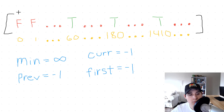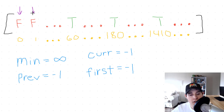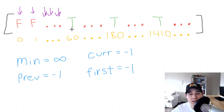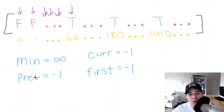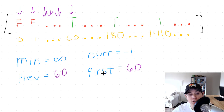We start iterating from index 0. Anytime we encounter a false, we skip it. So we get false on 0, 1, and all the way up to index 60. Once we get to index 60, we finally have a true. Both first and prev are set to negative 1, so we set both first and previous to index 60, and continue iterating.